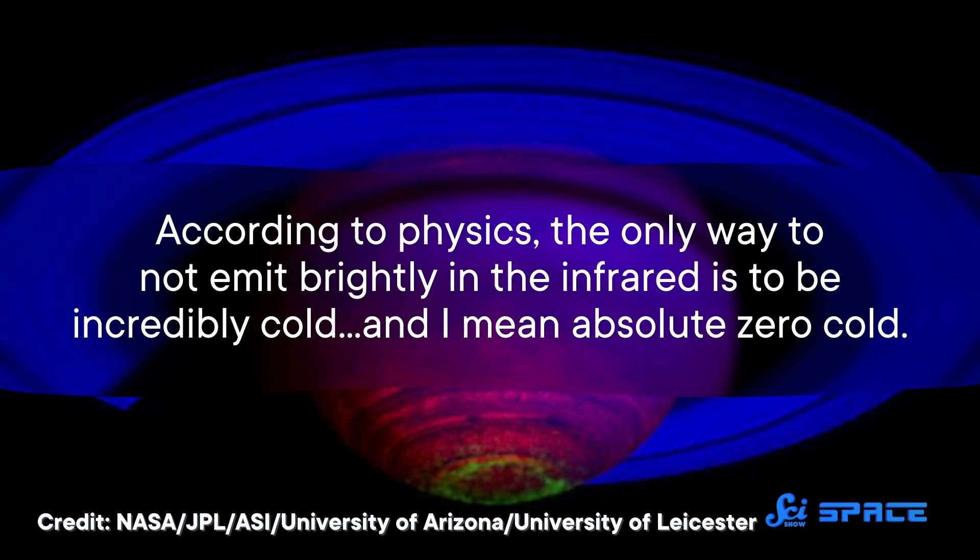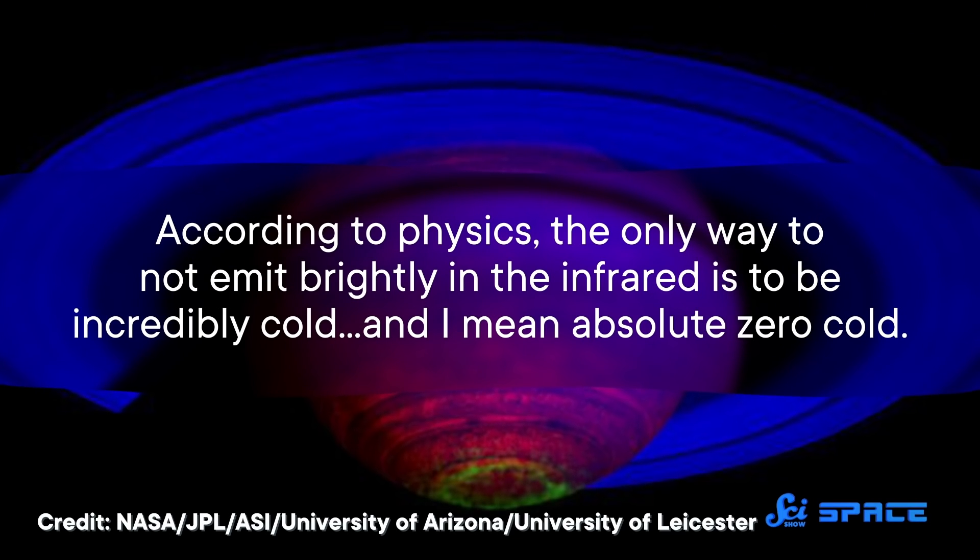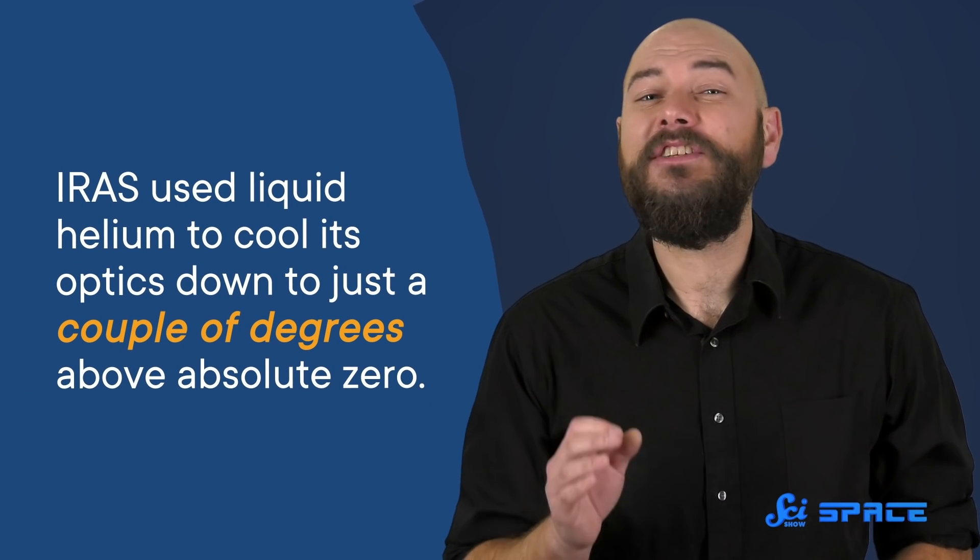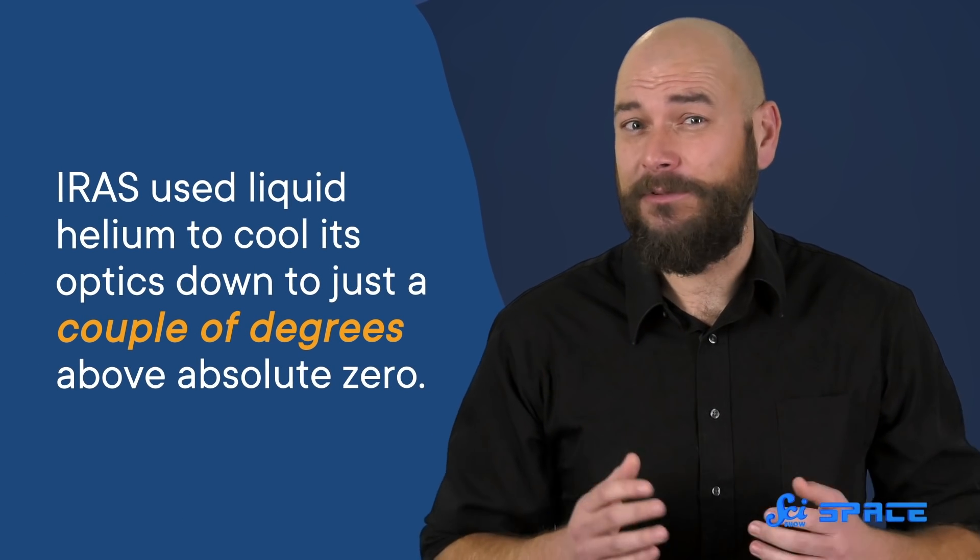According to physics, the only way to not emit brightly in the infrared is to be incredibly cold, and I mean absolute zero cold. And space is cold, but not nearly cold enough. So, IRAS used liquid helium to cool its optics down to just a couple of degrees above absolute zero. Then it began taking pictures.